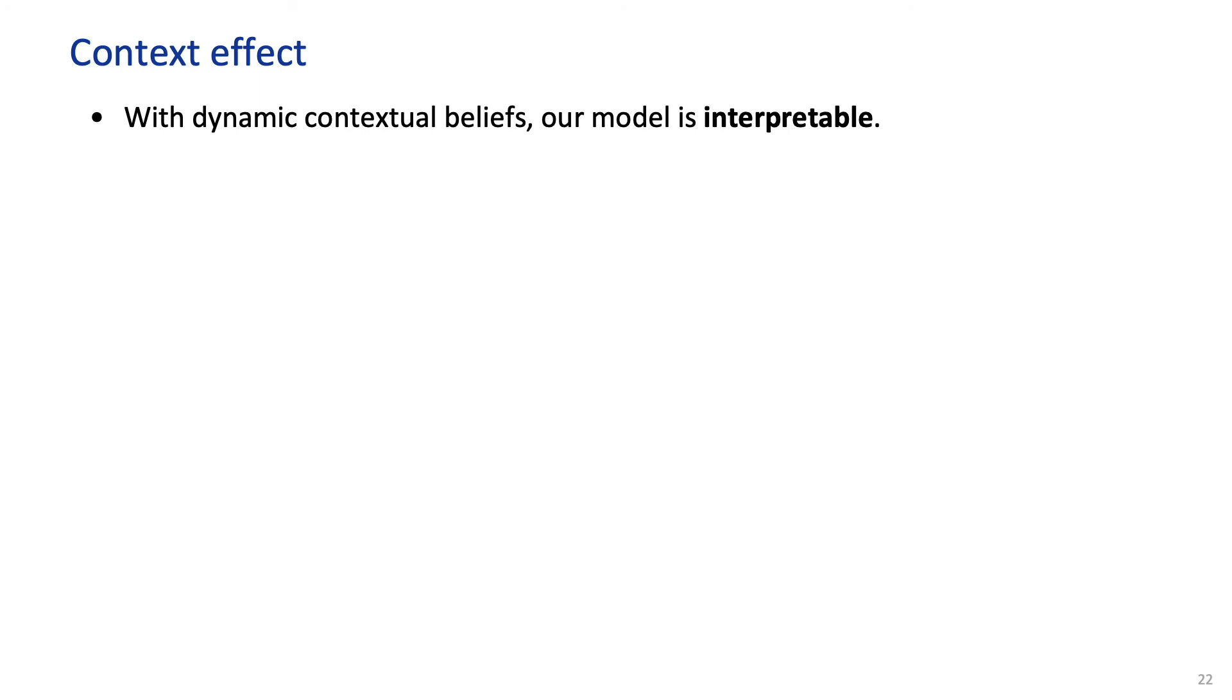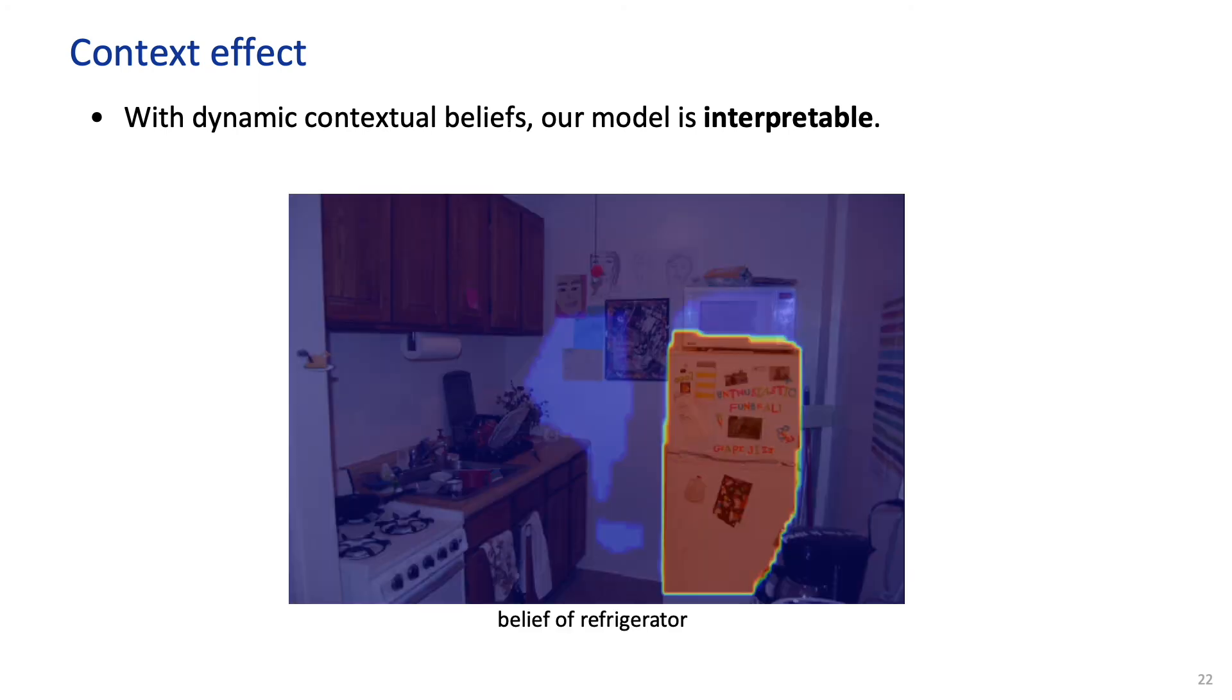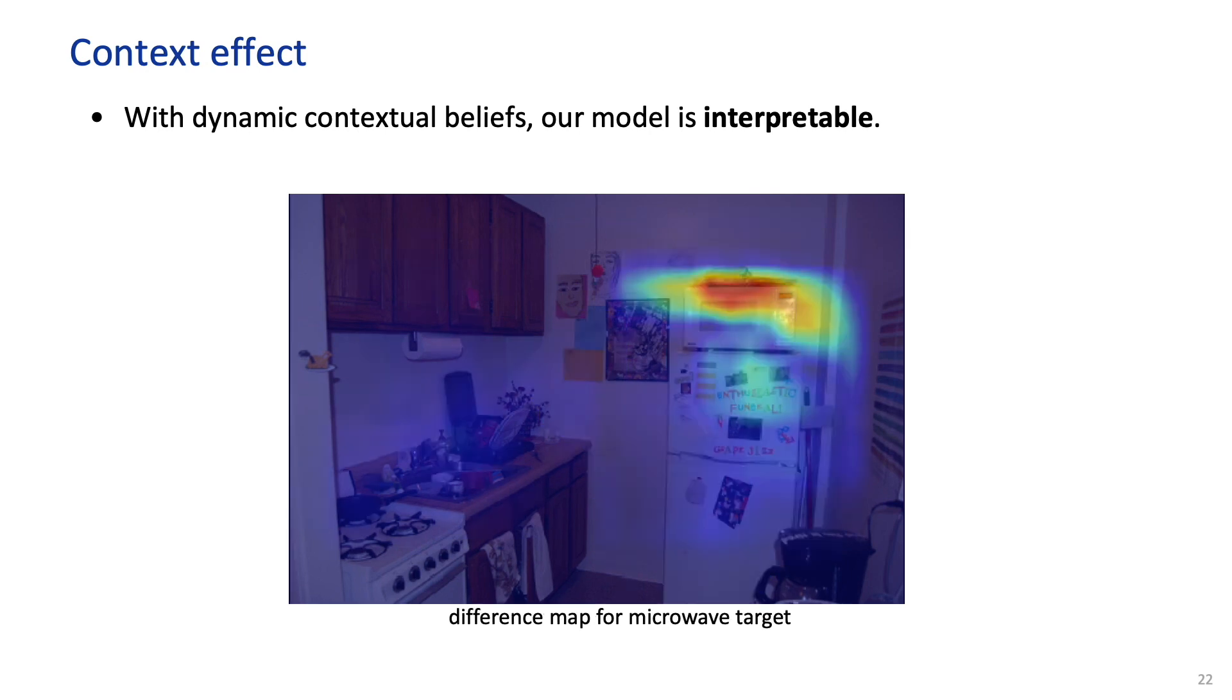We also show that with dynamic contextual belief, our model is highly interpretable. This figure shows the belief map of the refrigerator in the image. By looking at the difference in the action maps with and without that belief map, we can see that people are likely to search at the top of a fridge for microwave because that's where the microwave usually is.